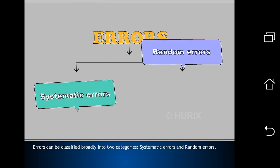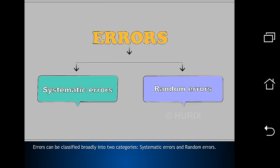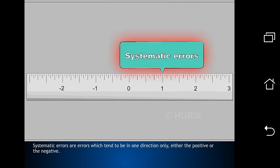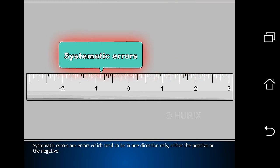Errors can be classified broadly into two categories, systematic errors and random errors. Systematic errors are errors which tend to be in one direction only, either the positive or the negative.